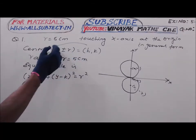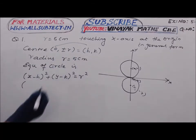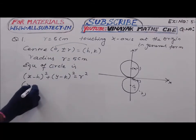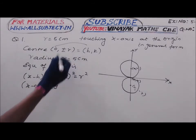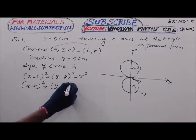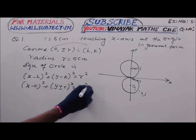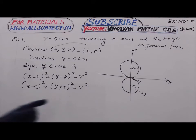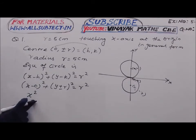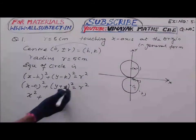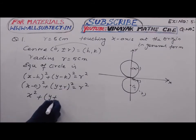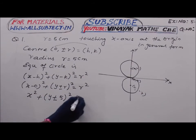Substituting h = 0 and k = ±r: (x - 0)² + (y ± r)² = r². Since r = 5, this gives x² + (y ± 5)² = 25.